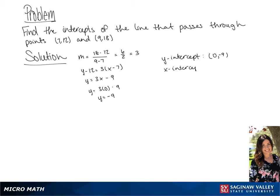To find the x-intercept, we're going to plug in 0 for y, giving us 0 equals 3x minus 9. Now we're going to add 9 to each side, and divide both sides by 3, giving us x equals 3. So our x-intercept is 3, 0.